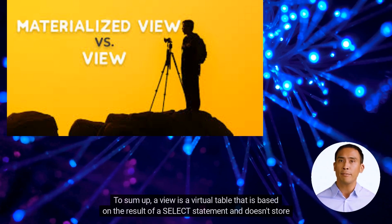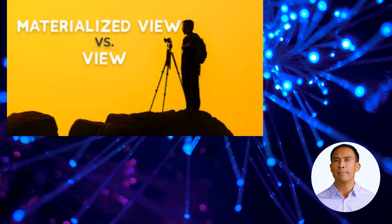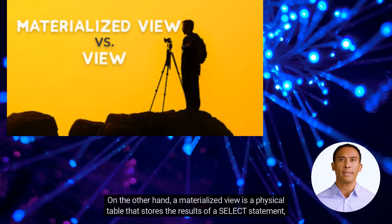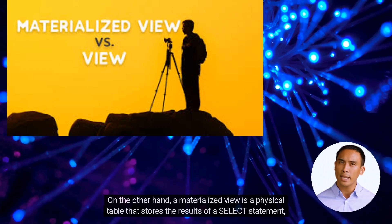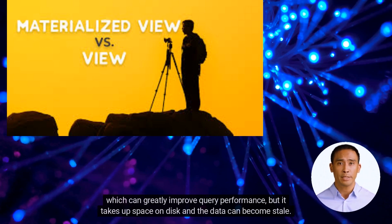To sum up, a view is a virtual table that is based on the result of a select statement and doesn't store any data. On the other hand, a materialized view is a physical table that stores the results of a select statement, which can greatly improve query performance, but it takes up space on disk and the data can become stale.